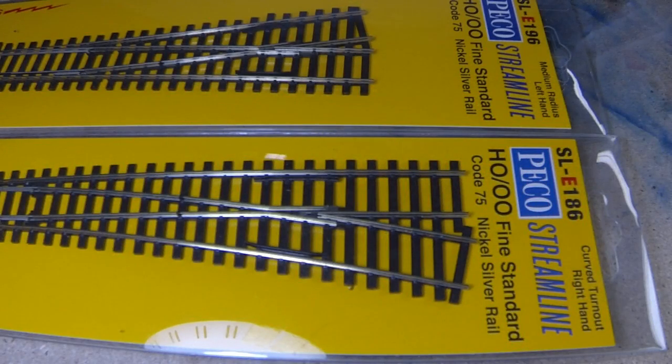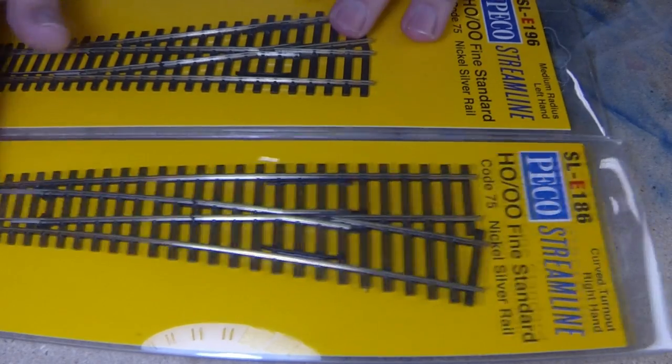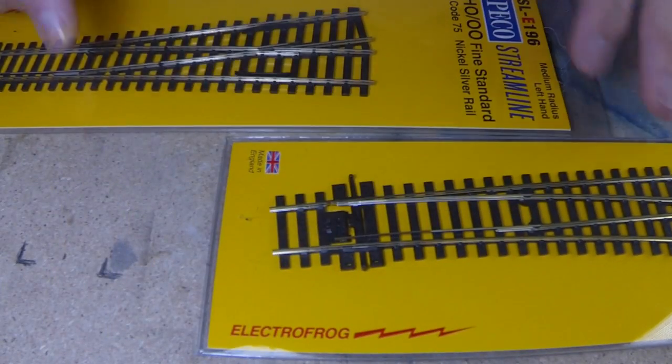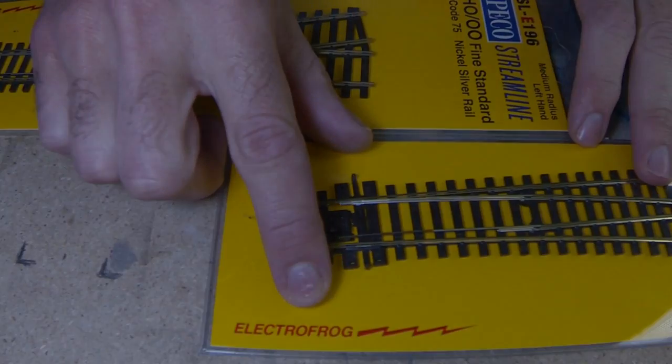Hey guys, today I'm going to show you a how-to video on preparing Pico Co 75 turnouts for use with DCC and Tortoise motors. This video will specifically apply to ElectroFrog turnouts.